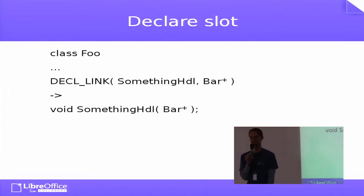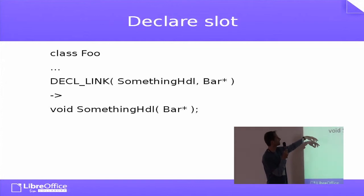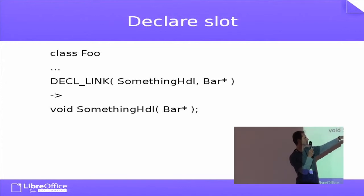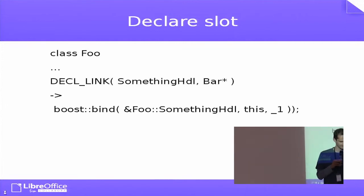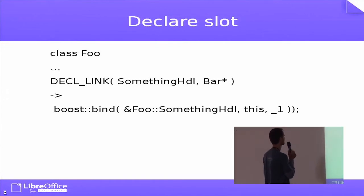So how do you declare a slot, the function which will be called? In the class, you used to do DECL_LINK and you describe what it was called and what parameters it used. And now it's just a function or member function.